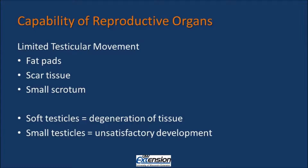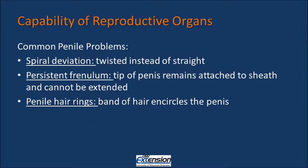Some common penile problems that occur in bulls are spiral deviation, persistent frenulum, and penile hair rings. Spiral deviation is where the penis is twisted instead of straight. A persistent frenulum is where the tip of the penis remains attached to the sheath and cannot be extended. A persistent frenulum is a genetic disorder but can be corrected by surgery. Penile hair rings are where a band of hair encircles the penis. This can cause scarring and infection if left untreated.